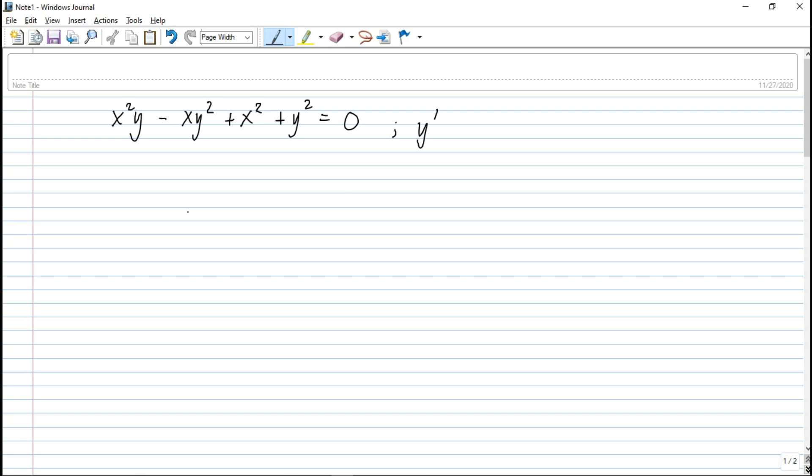In this particular problem, we're going to find y prime. So the derivative of this x squared y with respect to x minus derivative of this x y squared with respect to x plus derivative of this x squared with respect to x plus derivative of this y squared with respect to x is equal to 0.